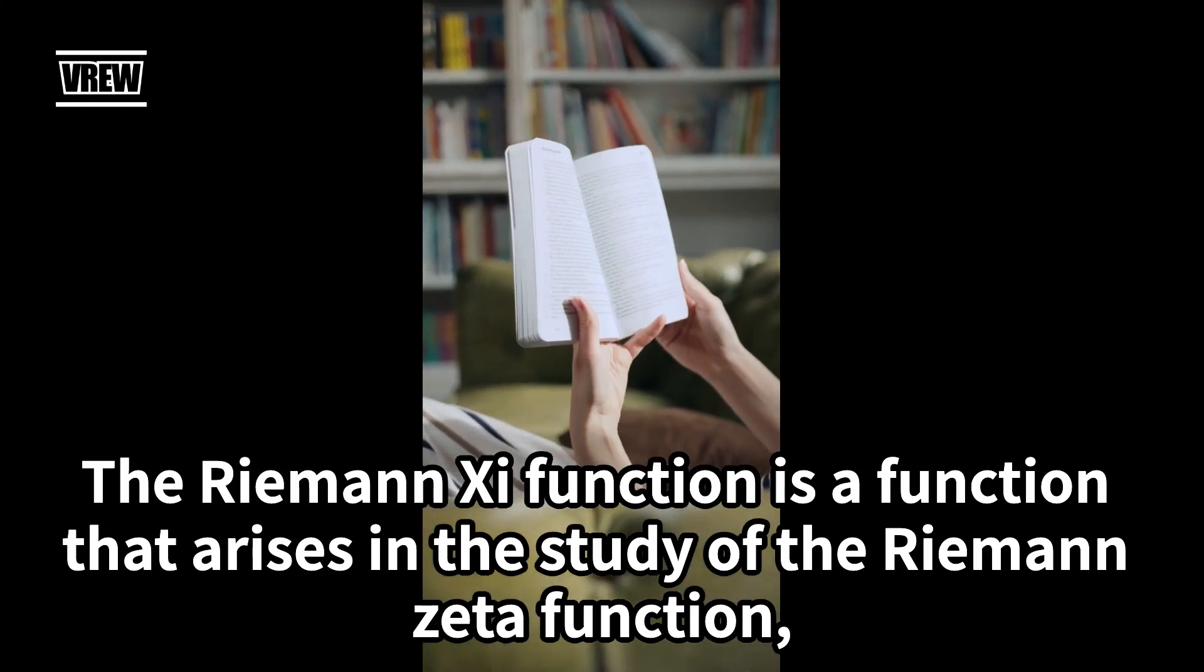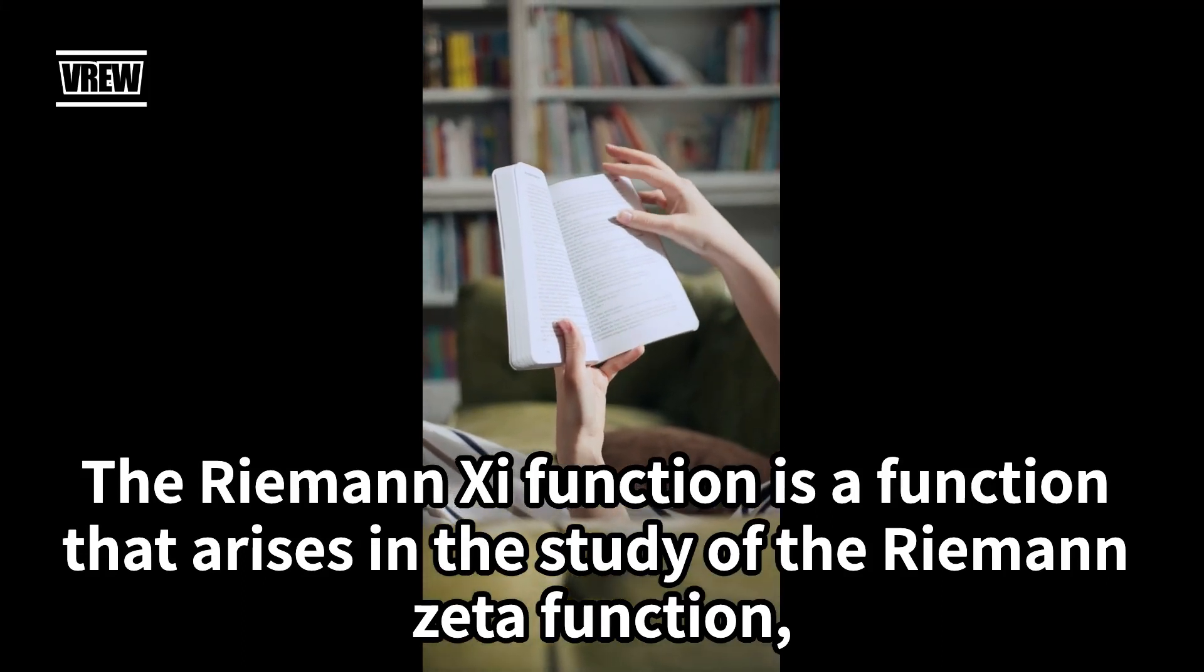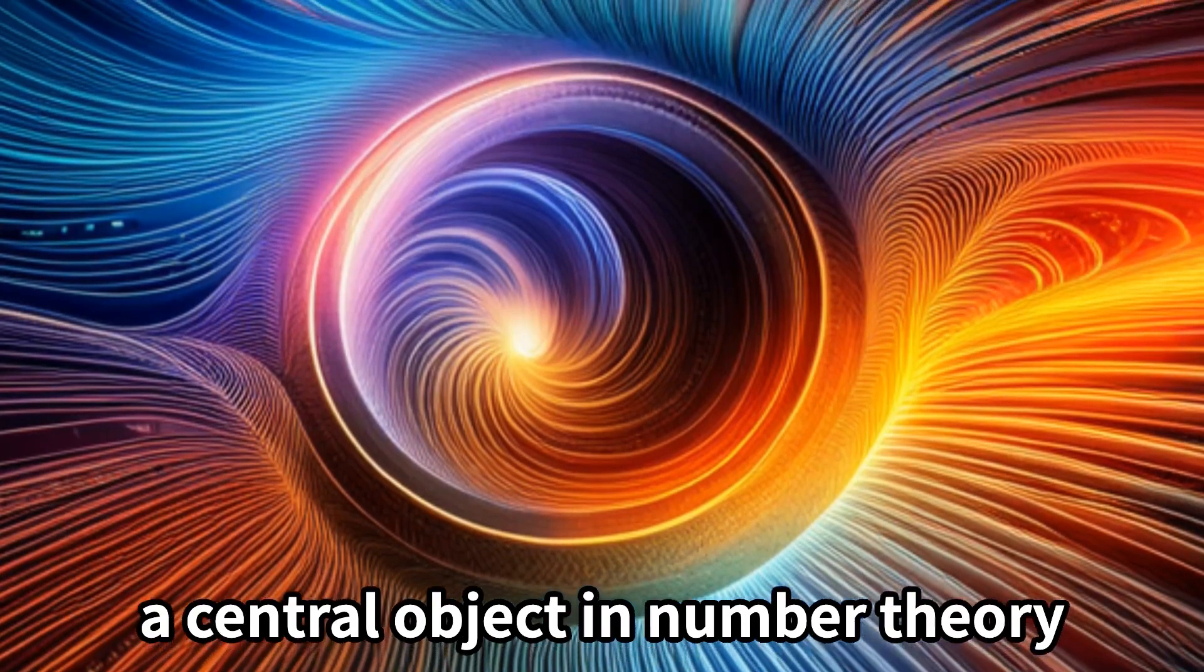The Riemann-Chi function is a function that arises in the study of the Riemann-Zeta function, a central object in number theory.